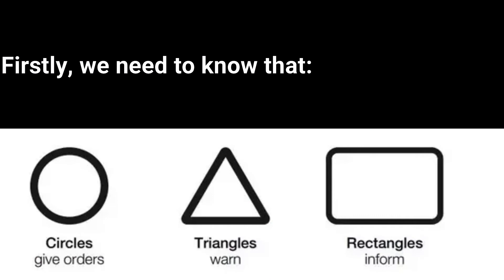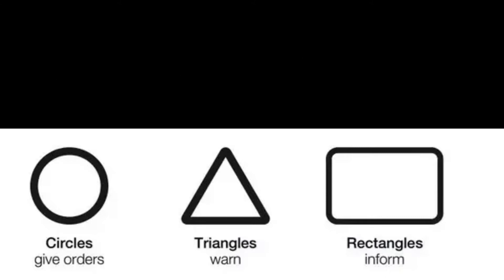Hello everyone. Today this video is about road signs in the UK. We've got three main road sign shapes. One of them is a circle shape — the circular shape gives you orders. If you ever see a circular shape, it will direct you to do something mandatory, which means you have to do it. There are no options for you not to do it.